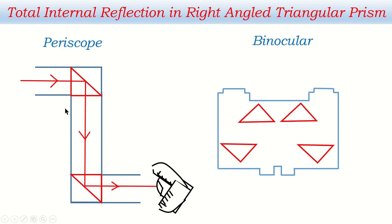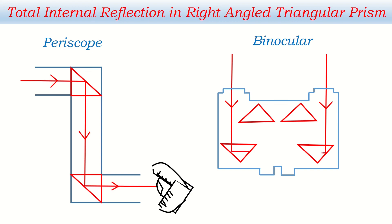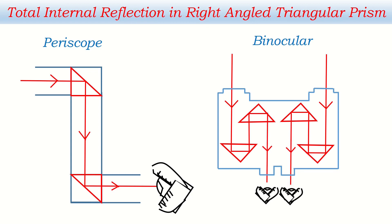The periscope is used in submarines. In a binocular, light from an object enters the prism, undergoes total internal reflection multiple times, and exits so the object can be seen clearly. The intensity of light is not affected during total internal reflection. In this way, prisms are used in periscopes and binoculars to turn light by 90 degrees and 180 degrees.